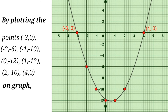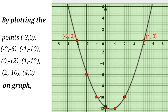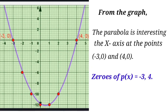Now we have to find the zeros from the graph. The parabola is intersecting the x-axis at the points (-3, 0) and (4, 0). Therefore, the x-coordinates of those points are -3 and 4. Therefore, the zeros of p(x) are -3 and 4. So like this we can draw the graph of a given quadratic polynomial. That's all for today's class — we'll meet in the next class with another problem. Thanks for watching.